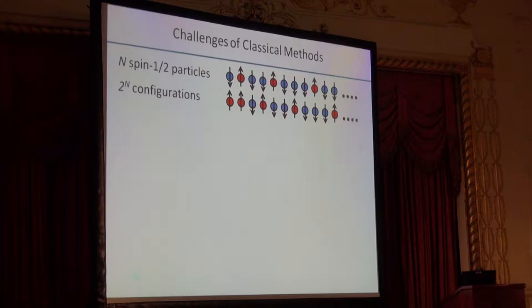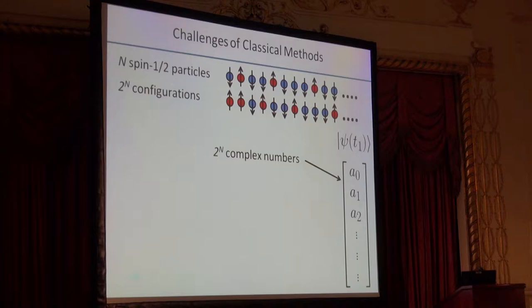Since this is quantum mechanics, we can be in a coherent superposition of any or all of these different configurations. If we wanted to write down the wave function at a particular time, this requires keeping track of 2^n different complex numbers. As a point of reference, 32 spins requires 32 gigabytes of RAM just to write down the state of the system, easily more RAM than any laptop in this room right now.